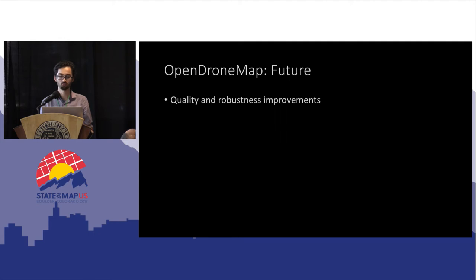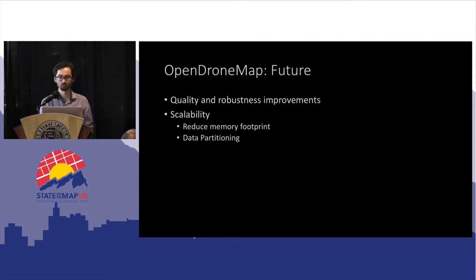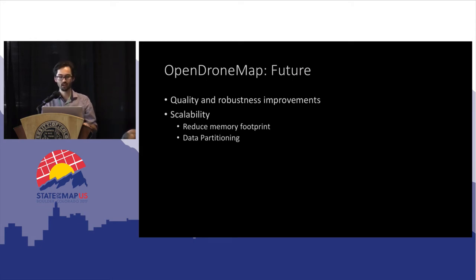Where do we want to see more improvements? We want better maps, and we want to expand the boundary of how decent a dataset has to be to get processed — add robustness. We want to scale up, to be able to process 200,000 images, which is currently impossible — you'd need a million gigabytes of memory. We want data partitioning, chunking data to process separately, reducing memory footprint.